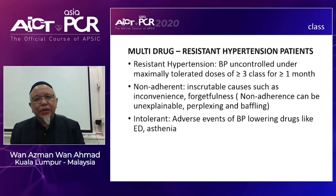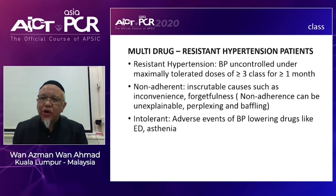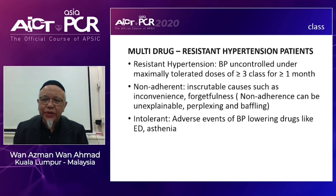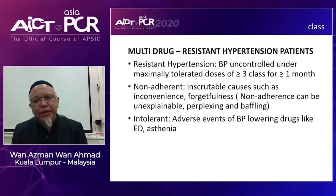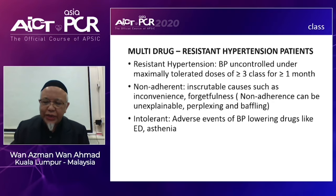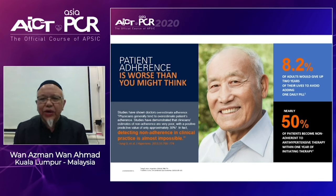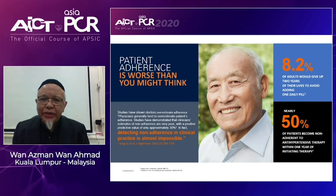What do we mean by resistant hypertension? These are patients whose blood pressure is not controlled on maximally tolerated doses of more than three classes of antihypertensive medication for one month or more. Patients are often non-adherent due to denial, inconvenience, or forgetfulness — which can be perplexing and baffling. In a busy clinical setting, it is always challenging to determine whether the patient is adherent to medication. In most studies, 50% of patients on antihypertensive medication become non-adherent after one year.